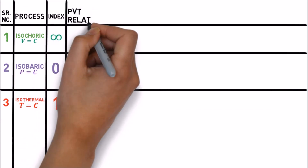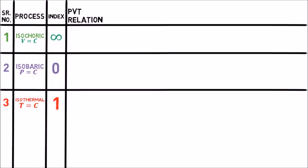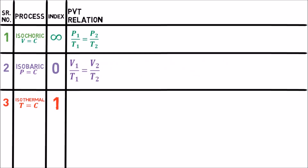Next column is of pressure-volume-temperature relations, i.e. PVT relations of these processes. For isochoric process, we get PVT relation as P1 by T1 equal to P2 by T2, which is nothing but Gay-Lussac's law equation when volume remains constant. For isobaric process, it is V1 by T1 equal to V2 by T2, given by Charles' law equation when pressure remains constant.